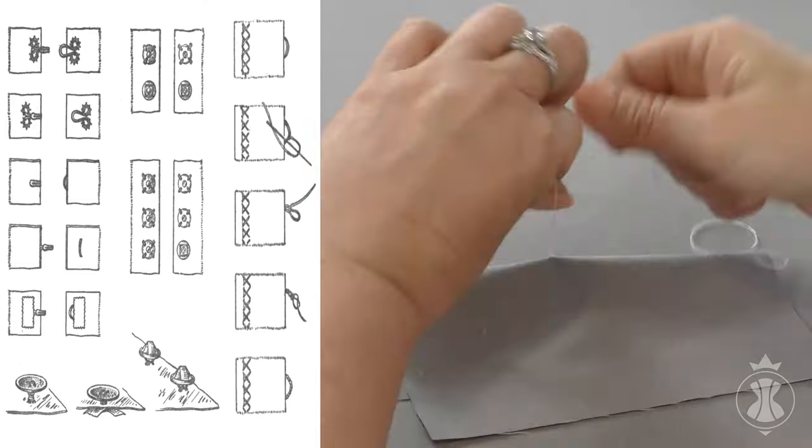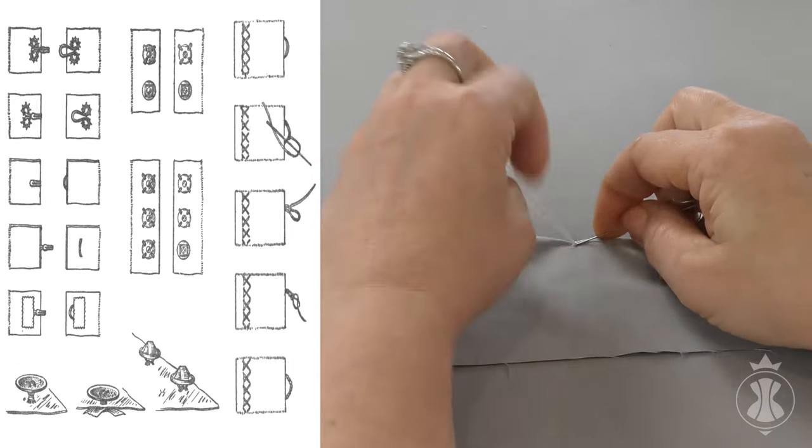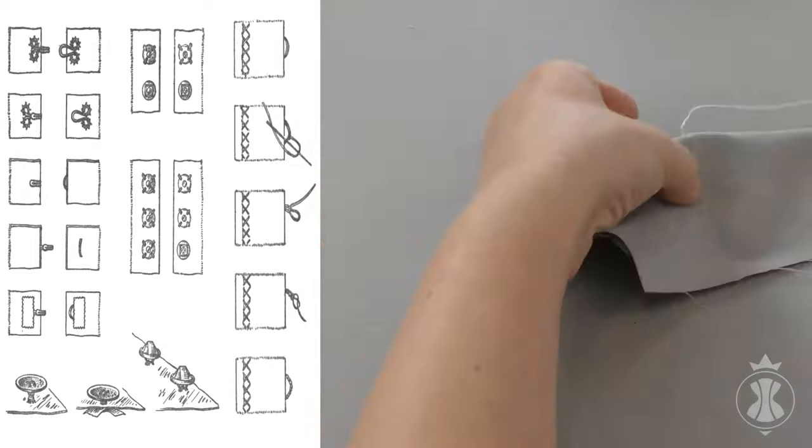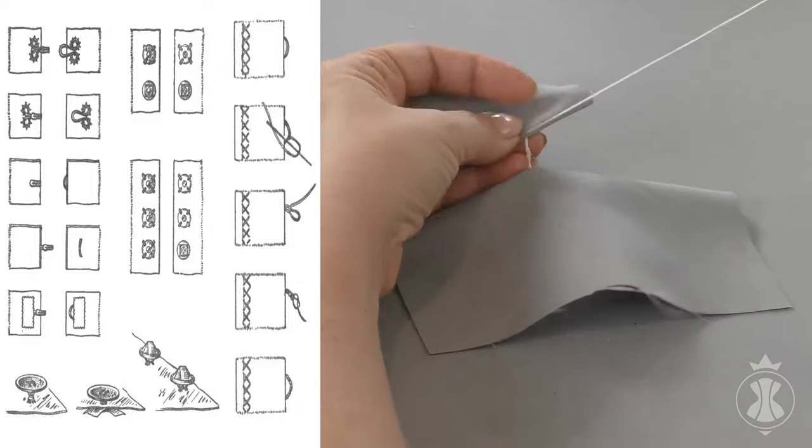Special stitches. Special stitches are used to make bar tacks and sew hardware to the garment. Buttons, hook and eye closures, loops, snap fasteners, etc.